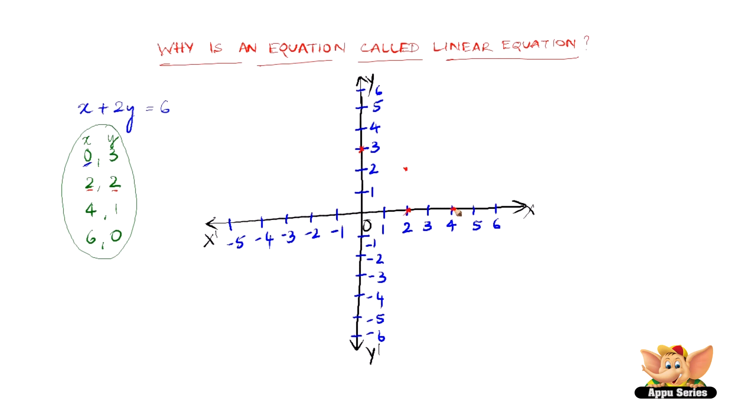The next value is 4, 1. So we have it here. The next value is 6, 0. So x axis it is 6, y axis it is 0.